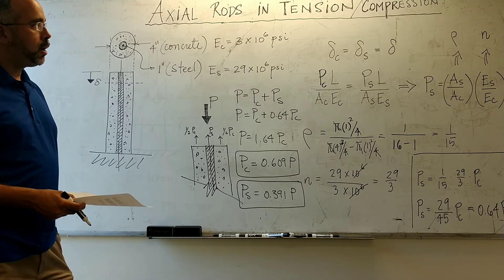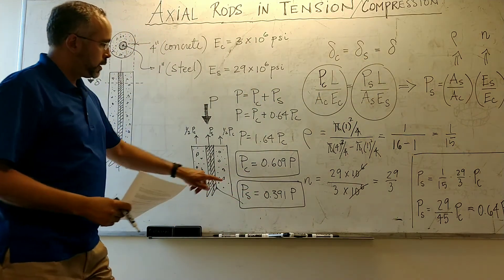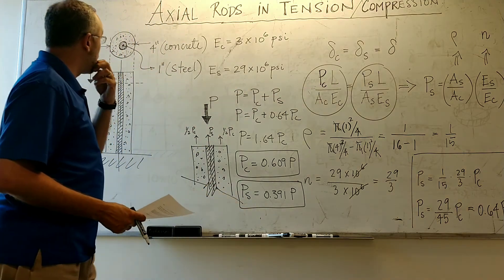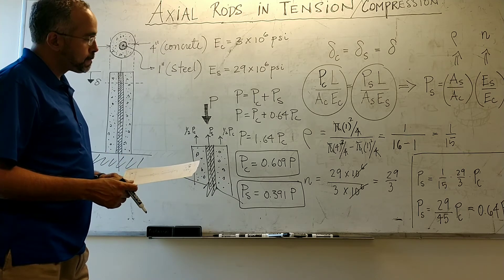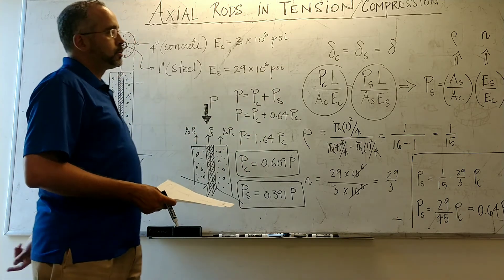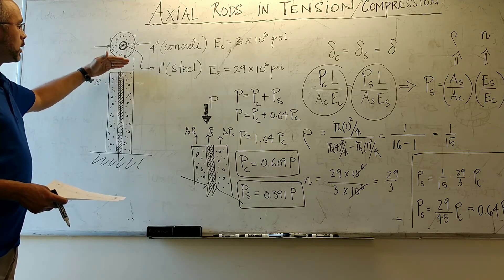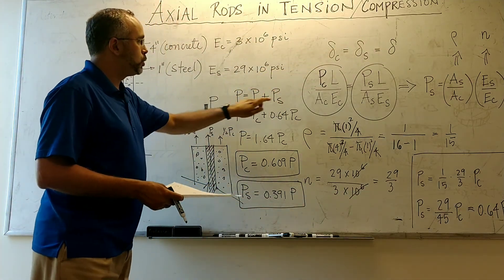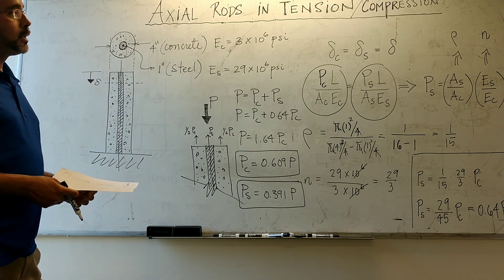To calculate the deflection, substitute P_concrete into the deformation formula along with the known area of concrete, elastic modulus of concrete, and length. Simply select the actual load acting on the column and substitute through the equations. This is how you calculate the relative load when two materials are in parallel — parallel means same deformation, and loads add to obtain the total. This is a very meaningful problem in reinforced concrete design.